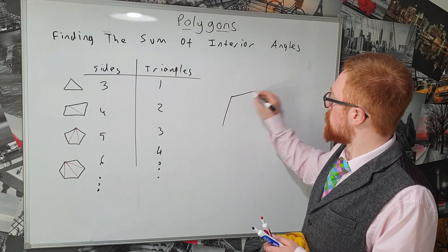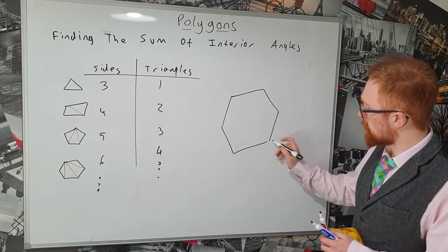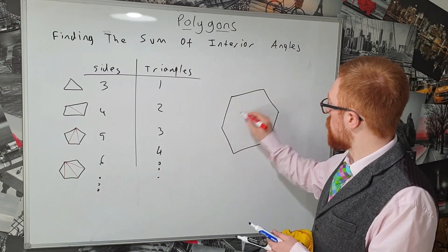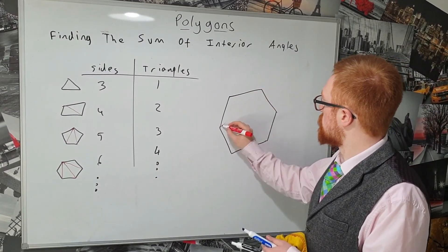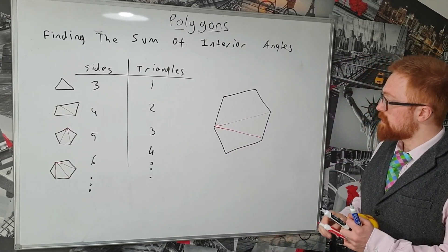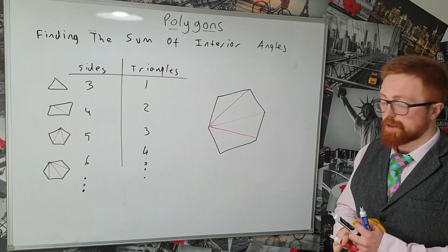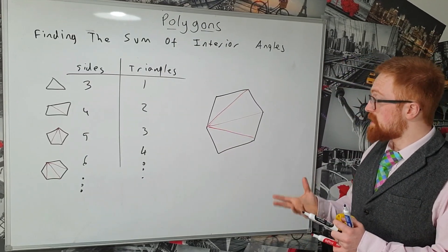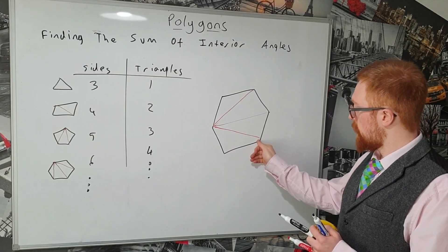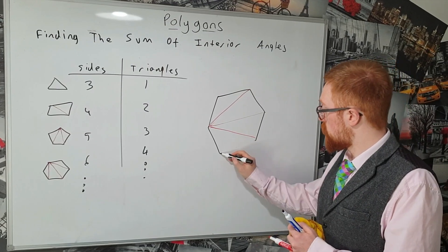So if we start with a six sided shape, obviously as we've seen we can split that into four triangles. Okay, now if we wanted to turn this six sided shape into a seven sided shape, the easiest way to do this and this will always work is if we replace one of the lines with two lines instead.